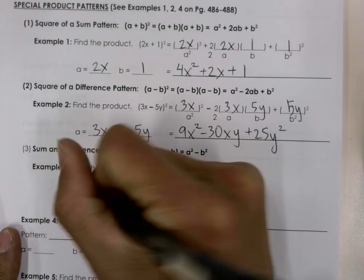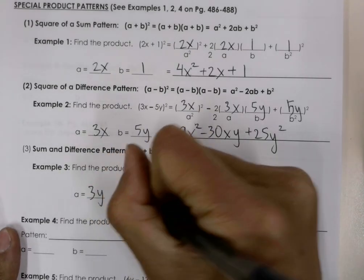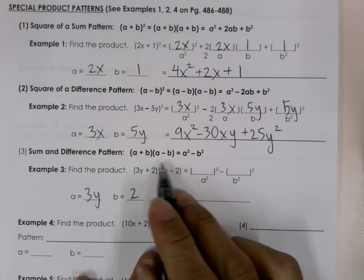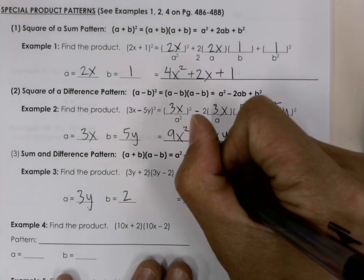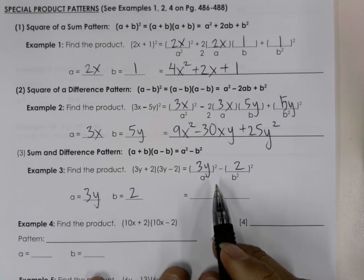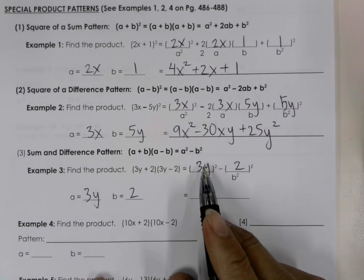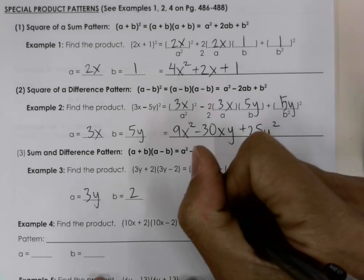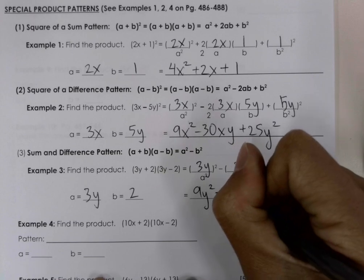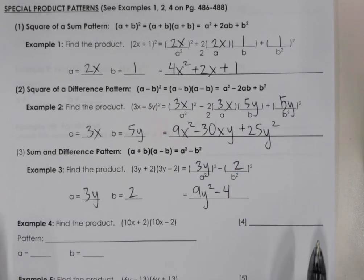And so this is really easy when you have this kind of pattern because all you need to do is put your a here, our 3y, and our b over here, our 2. And then we are going to do the square. So 3y times 3y is going to be 9y² minus 2 times 2 is going to be 4. So we have that there.